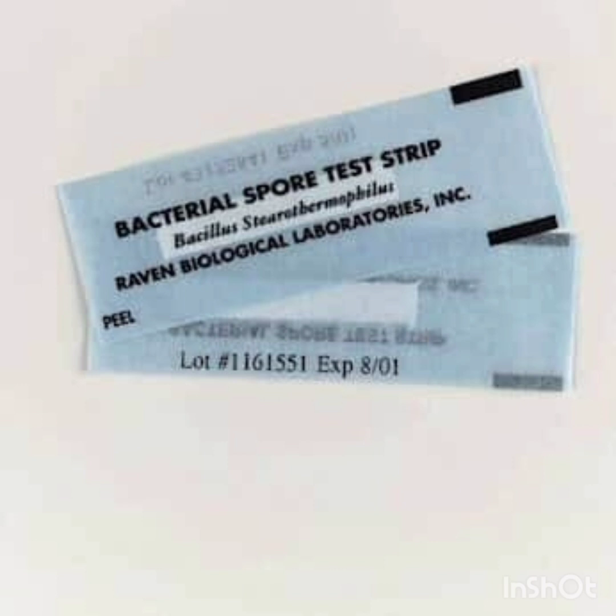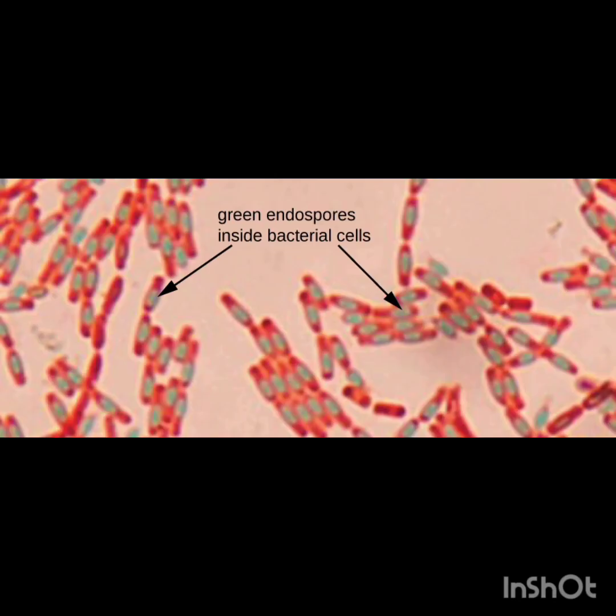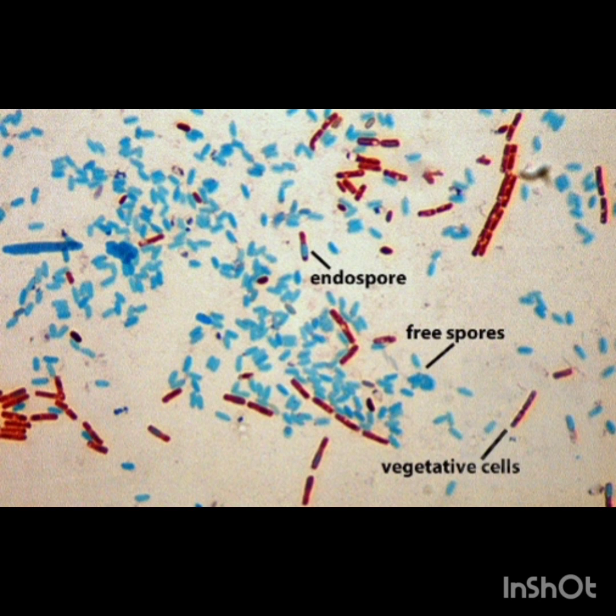For example, Bacillus stearothermophilus is used as a sterilization indicator. The process of spore formation is called sporulation. As bacterial spores are formed within the parent cell, these are called endospores.